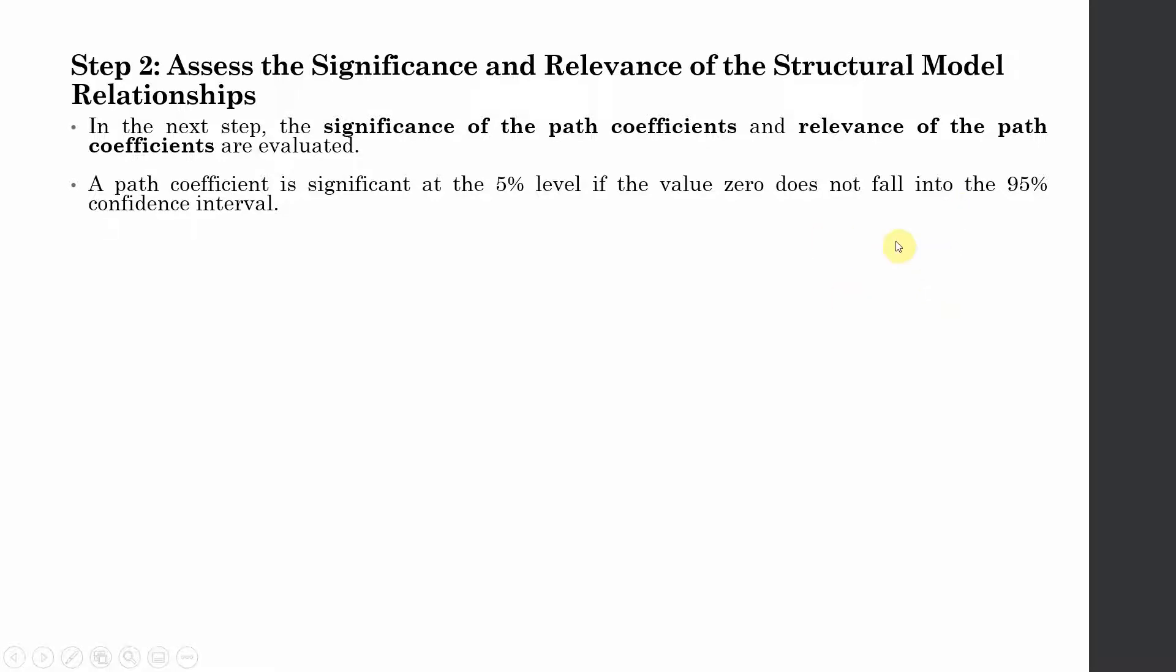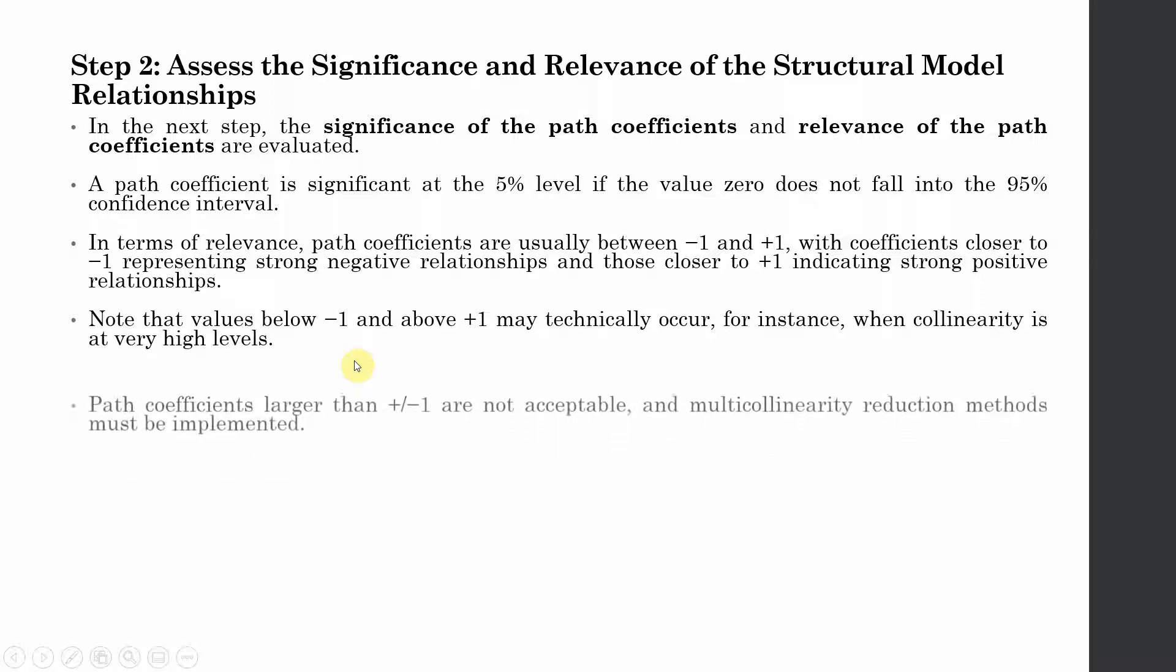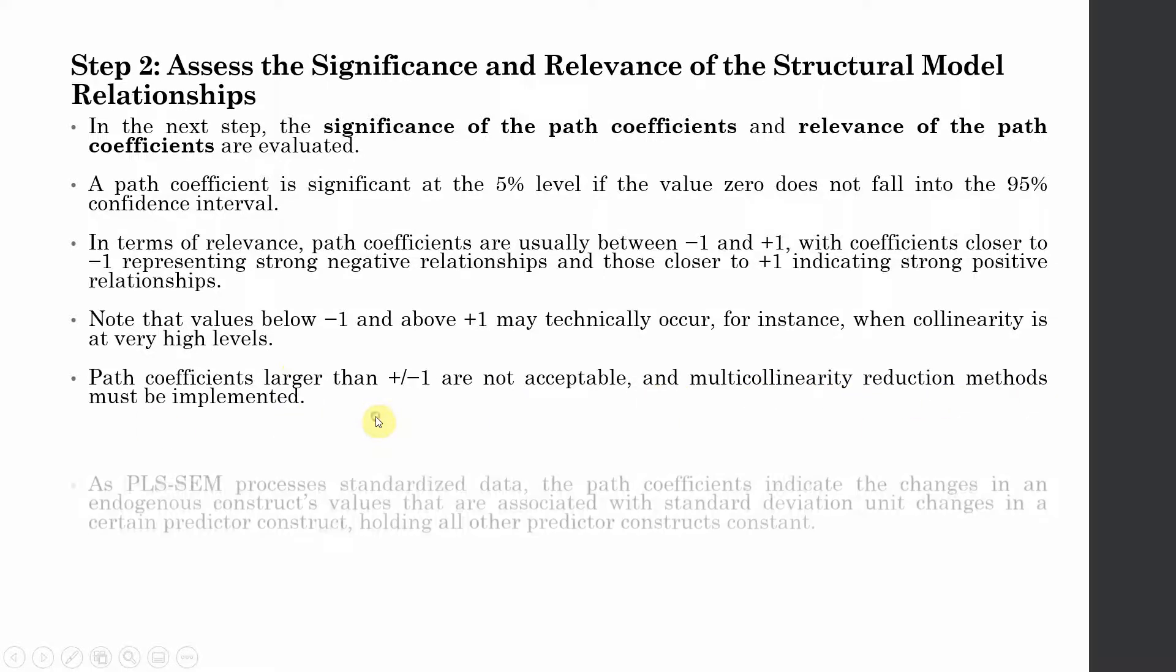In terms of relevance, path coefficients are usually between minus one to plus one, with coefficients closer to minus one representing strong negative relationships and those closer to plus one indicating strong positive relationships. Values below minus one and above plus one may occur when collinearity is at very high levels. Path coefficients larger than one are not acceptable and multicollinearity reduction methods must be implemented.